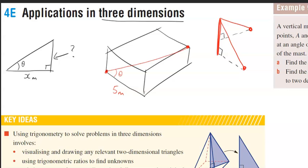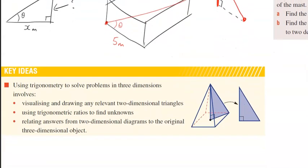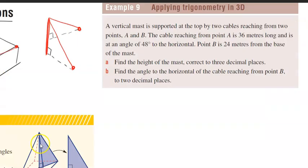The key ideas for this lesson: we're using trigonometry to solve three-dimensional problems. The three key steps are — first, visualize and draw any relevant two-dimensional triangles within the 3D object; second, use trigonometric or inverse trigonometric ratios to find the unknowns; and third, relate the answers from the 2D diagrams back to the original 3D object. You'll draw a 3D diagram, extract the 2D triangle, solve for the unknown, and relate it back to what was originally asked.